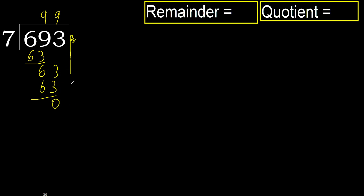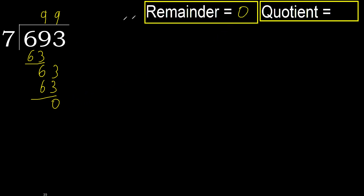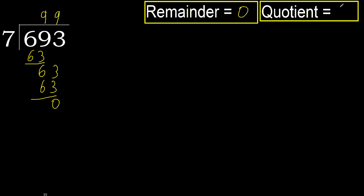Next — there is no more number, therefore finish it. 0 remainder. Therefore 693 divided by 7 is complete.